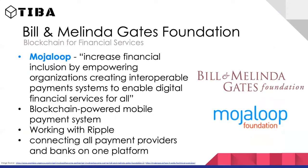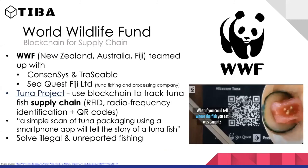The Bill and Melinda Gates Foundation has a project called Mojaloop, focused on financial inclusion and easier mobile payments. They work with Ripple and connect payment providers and banks to the platform, creating a single ecosystem that helps people without bank access make payments more easily.